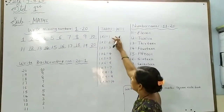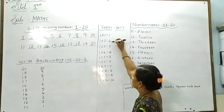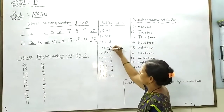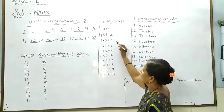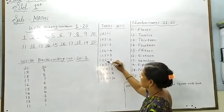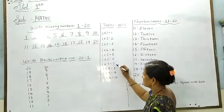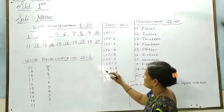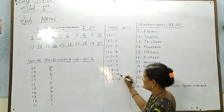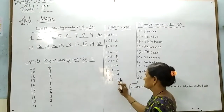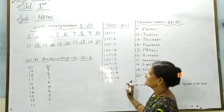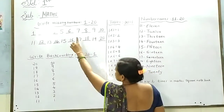One two is two. One three is three. One four is four. One five is five. One six is six. One seven is seven. One eight is eight. One nine is nine. One ten is ten. Okay.